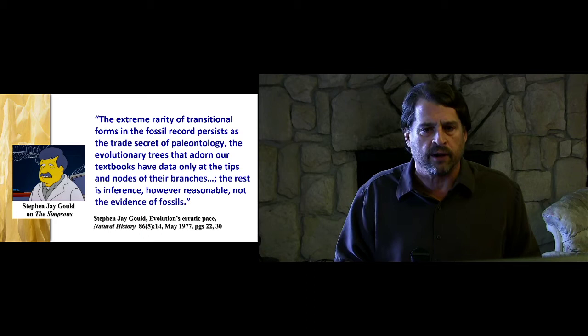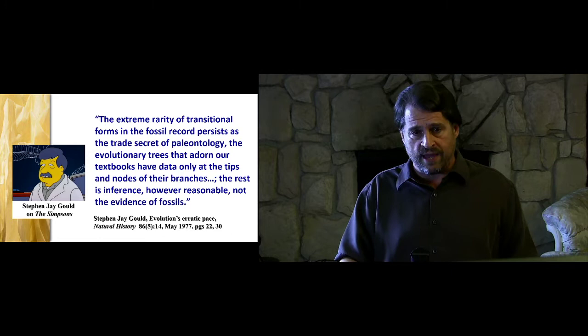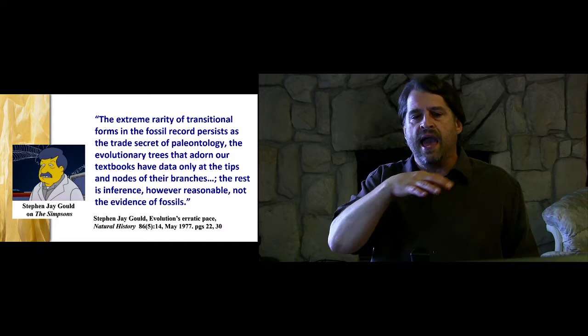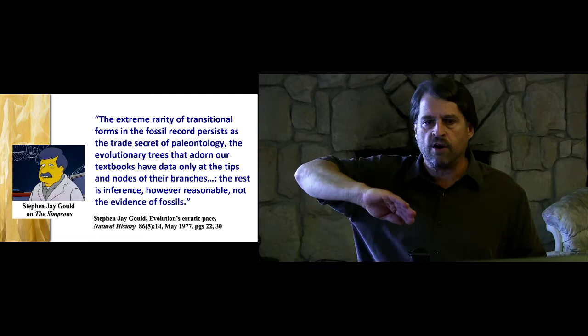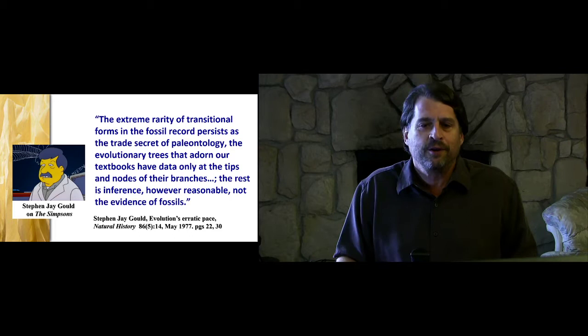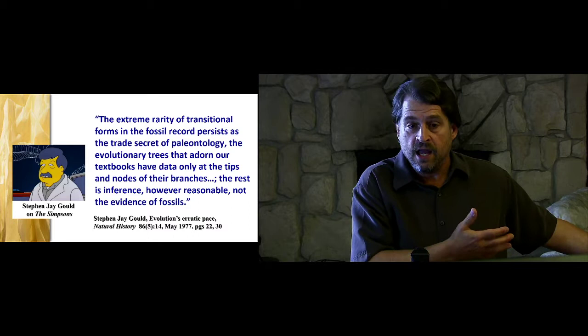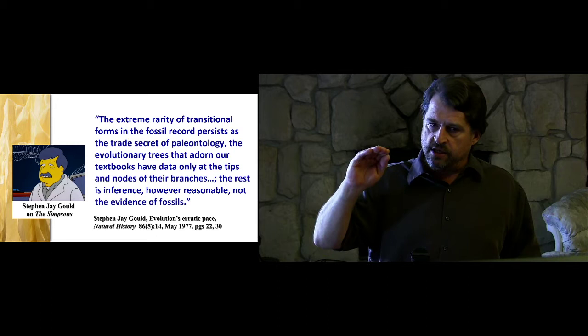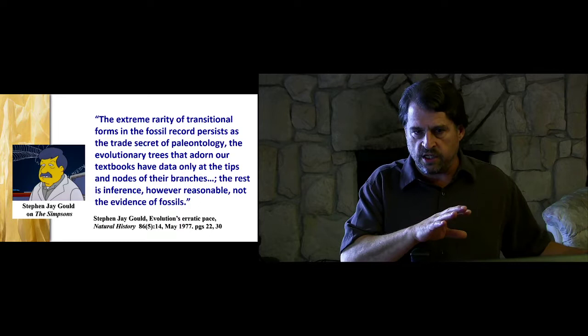Gould and others went on to propose a new theory called punctuated equilibrium to explain the tremendous absence of transitional forms. They argued that once an organism had adapted well it would enter a period of equilibrium, remaining the same and leaving fossil forms, but then would evolve rapidly in a punctuated manner — at such a rapid rate it would not be expected to leave fossil forms. But punctuated equilibrium is just saltation known by a different name.